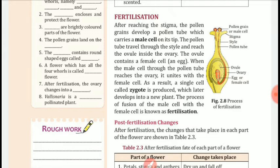We can see in the diagram the process of fertilization. The ovary can be seen, the ovule can be seen, the egg or female cell can be seen, the pollen tube can be seen, and the pollen grain can be seen. This is the process of fertilization.